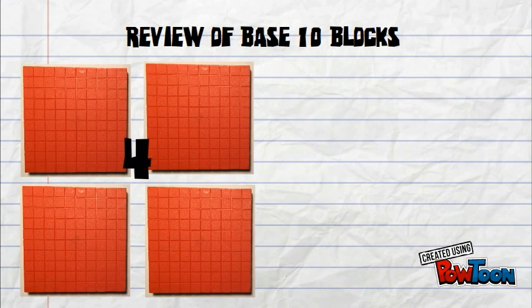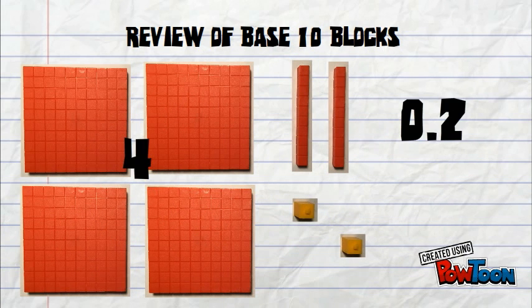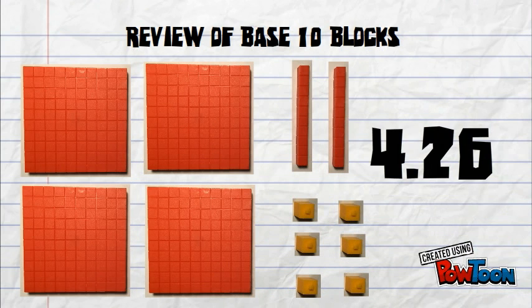Here we have 4 flats, 2 rods and 5, 6, 6 cubes. All together we have 4 and 26 hundredths.